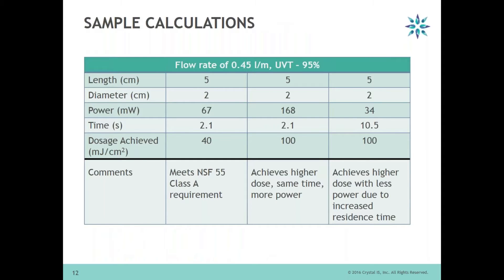Here is a very basic calculation I have done. I looked at the flow rate for the system, which is 0.45 liters per minute. The UV transmittance of the water used was 95%. The length of the flow cell was 5 centimeters and the diameter is 2 centimeters — that is the internal construction where the water is flowing. And the dosage requirement is 40 millijoules per square centimeter, based on NSF 55 Class A requirements.